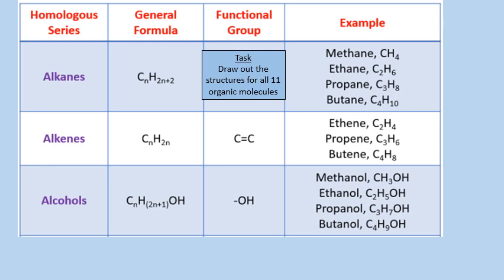You've got four examples of alkanes, three examples of alkenes, and four examples of alcohols. I want you to draw out the structures for every single one of them — the displayed formula, the structural formula, and the skeletal formula. So for each of the eleven compounds, draw all three types. Pause the video now and have a go at those.